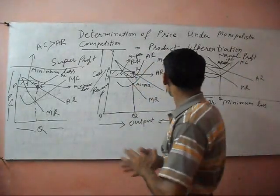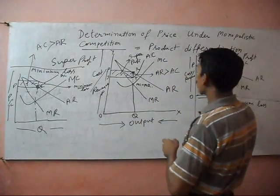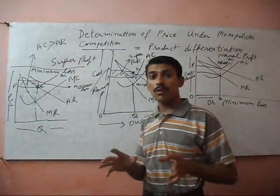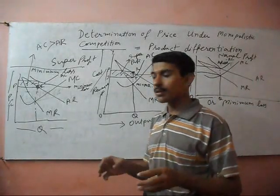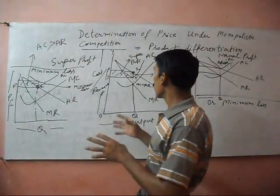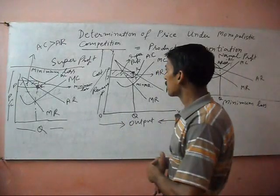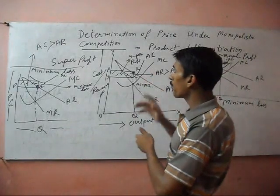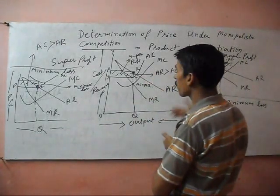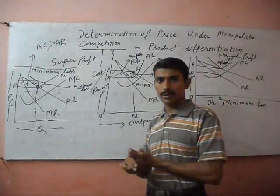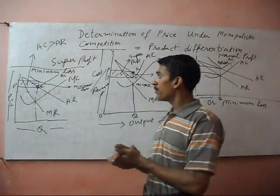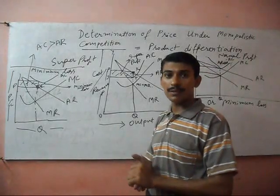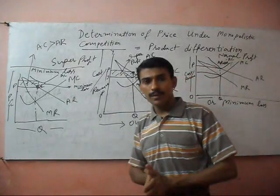In monopolistic competition, every firm will determine his own price. But at that time, the firm may get super profit, normal profit, or minimum loss depending on his decision of fixing the price. Thank you very much.